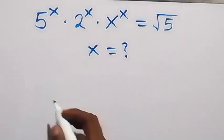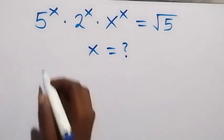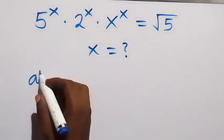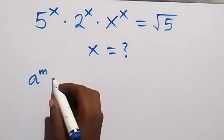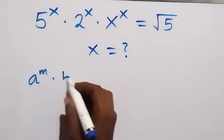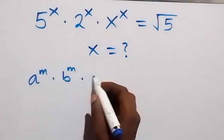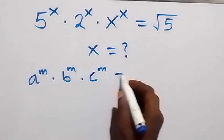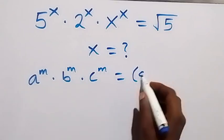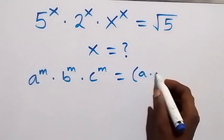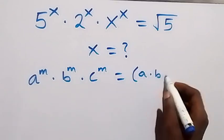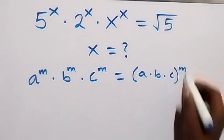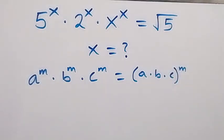To find the value of x here, when we have something of the form a raised to power m times b raised to power m times c raised to power m, this will be equal to a times b times c raised to power m, from the law of indices.